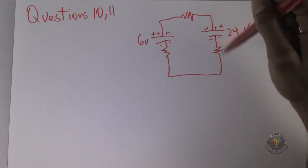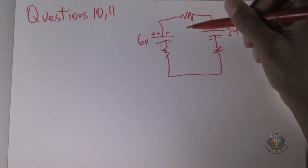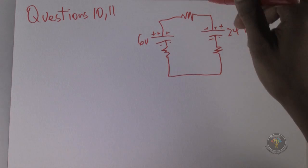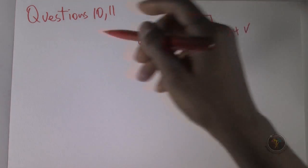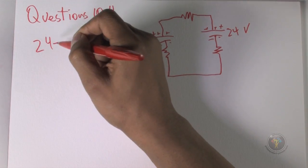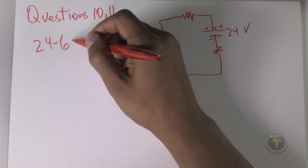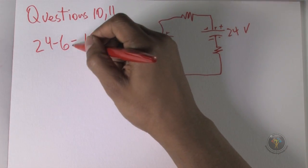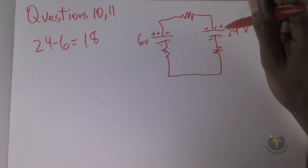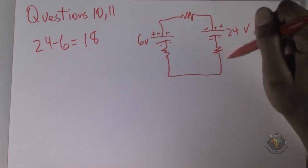The total voltage for this circuit will be 18 volts because this one will overpower the other one. It will try to push current in this direction, but overall the net flow of current will be in this direction because of the strength of this battery.